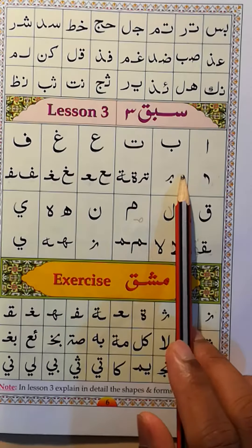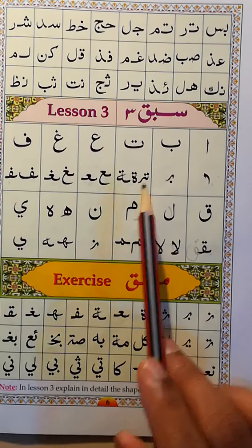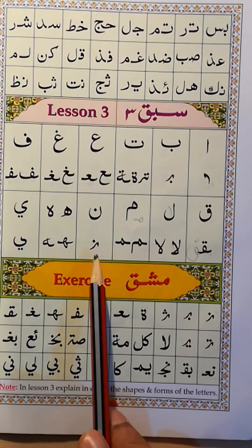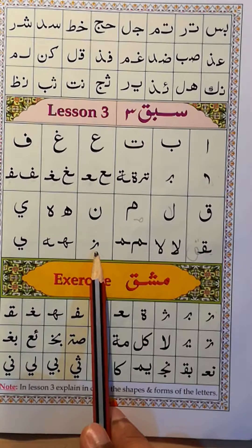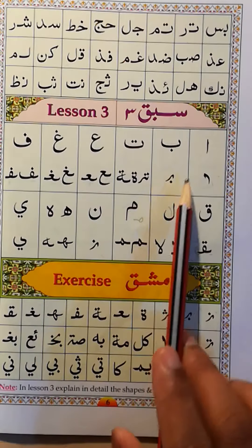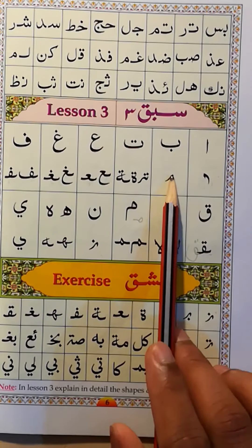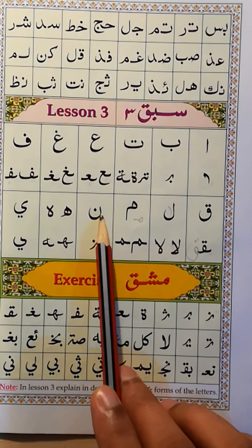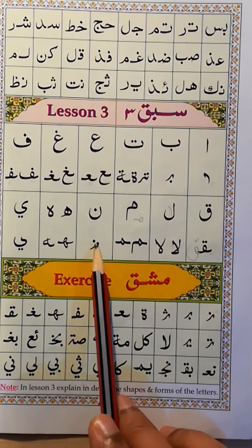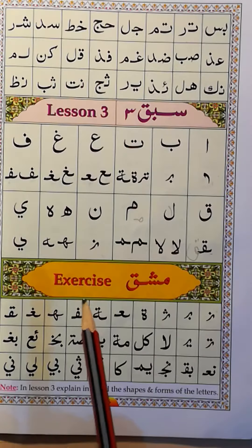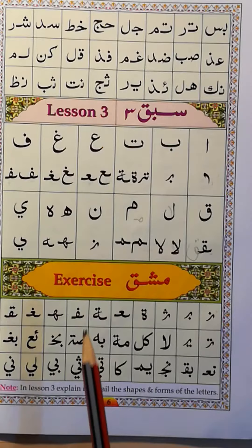This is the noon. Look — noon. And ya could look like this as well, similar. But we need to identify them with the dots. Ba has one dot at the bottom. Noon has one dot at the top. So if you see a shape like this, we identify it by its dot — this is the noon.